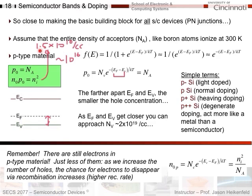Further terms used in this course: lightly doped material is labeled P-minus; normal doping is just P-silicon; heavy doping is P-plus; and P-plus-plus (degenerately doped) means the material no longer acts much like a semiconductor and behaves more like a metal. The same equations used for holes in P-type apply analogously to electrons in N-type material using the appropriate density of states and Fermi distribution.